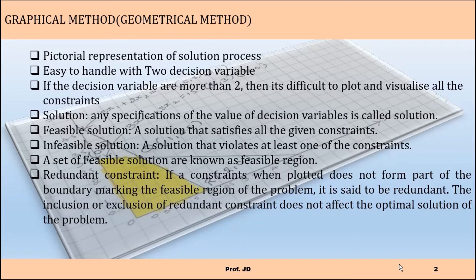The graphical method, also sometimes known as the geometrical method, is a pictorial representation of the solution process. In this method you can actually visualize what is your feasible region, what are the corner points, which constraint is a binding constraint, and which constraint is a redundant constraint. All this information you can get simply by viewing the solution, making it easy to handle with two decision variables. You can use it for three decision variables also, but the solution process becomes tedious, laborious, and very difficult to visualize.